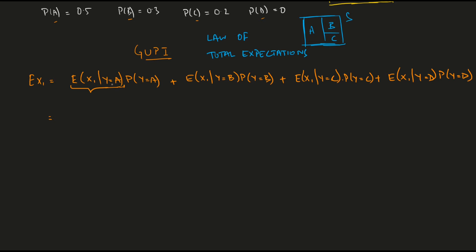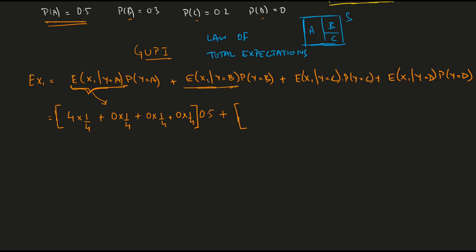I've now conditioned on the fact that A is the correct answer. If A is correct and GUPY picks it, she scores 4 marks. But GUPY is just randomizing her choices — she chooses A with probability 1/4 and scores 4, chooses B with probability 1/4 and scores 0, chooses C with probability 1/4, and D with probability 1/4. So her expected score given A is correct is 4 × (1/4) = 1. This first bracket equals 1, and the probability of A being correct is 0.5.